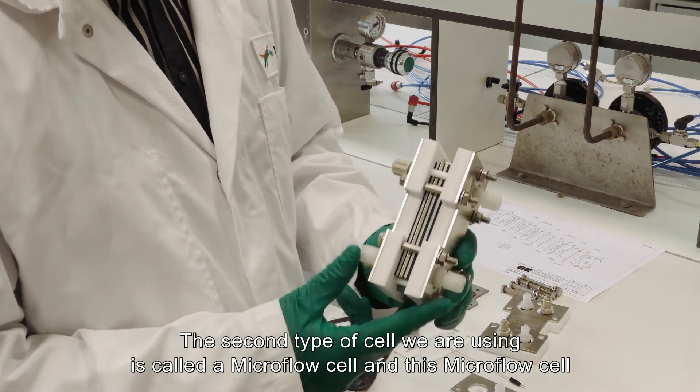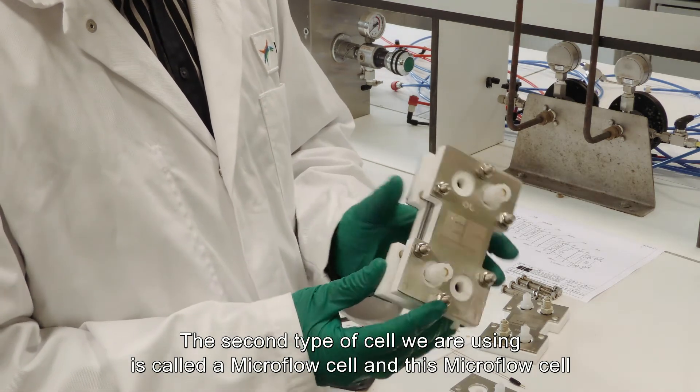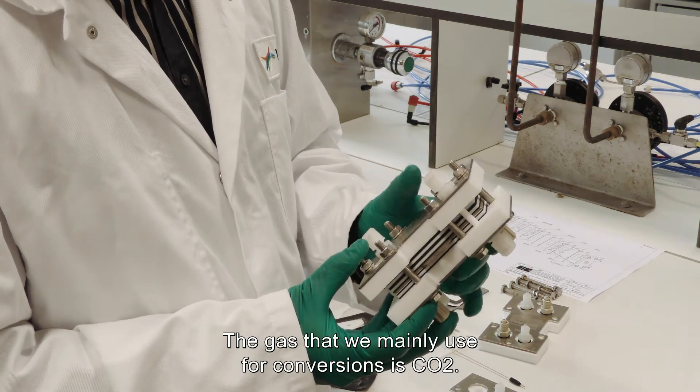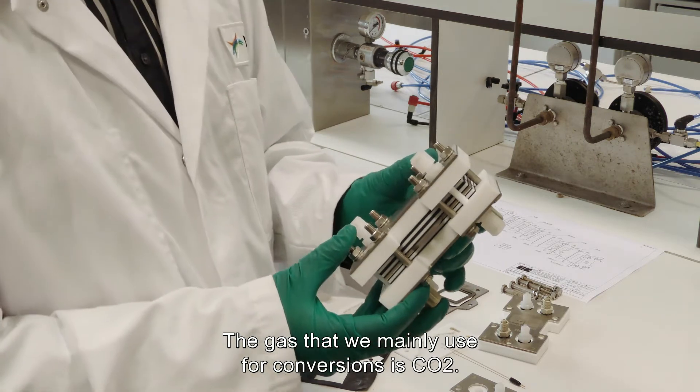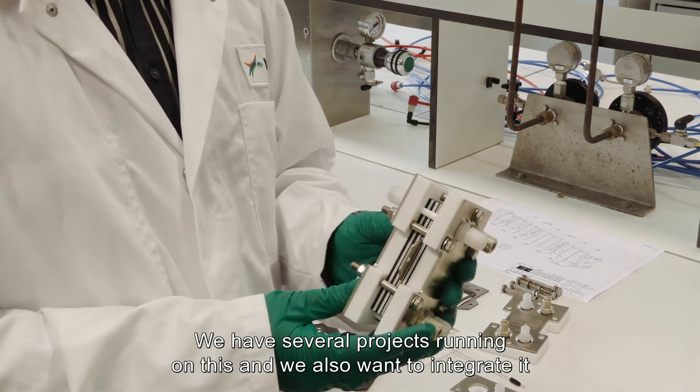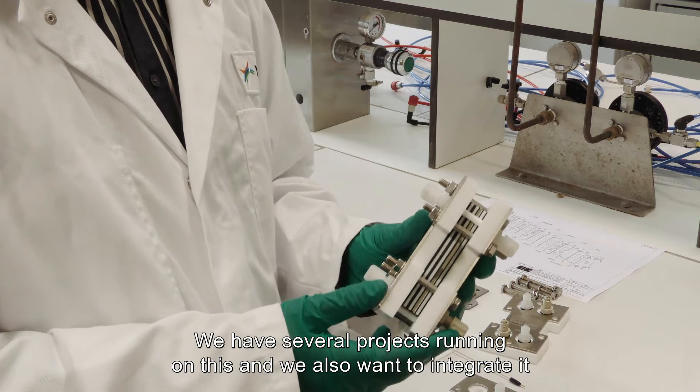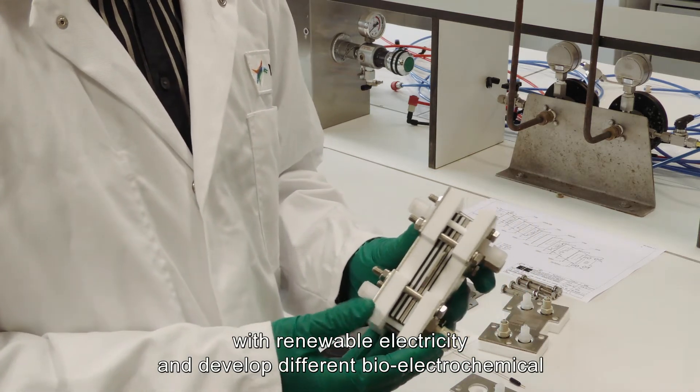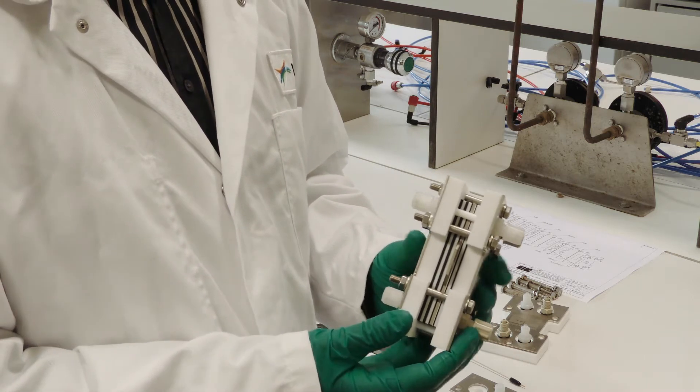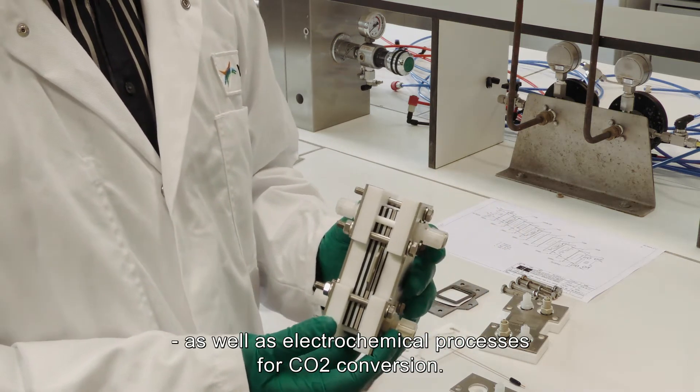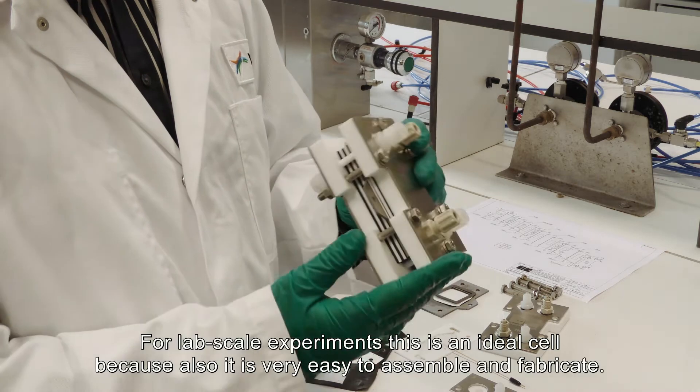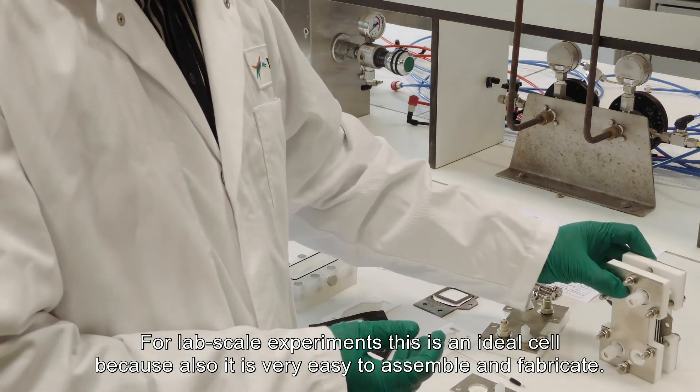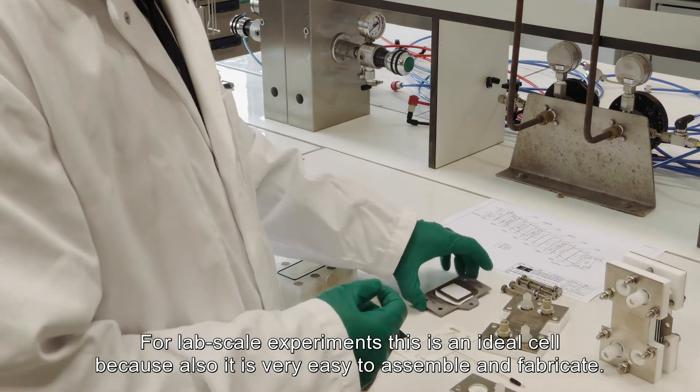This micro flow cell is currently being used for gaseous conversions, and mainly the gas that we are using for conversion is carbon dioxide CO2. We have several projects running on this and we also want to integrate it with renewable electricity and develop different bio-electrochemical as well as electrochemical processes for carbon dioxide conversion. For lab scale experiments this is an ideal cell because it is very easy to assemble and fabricate.